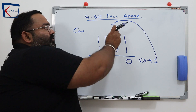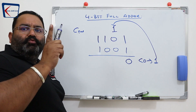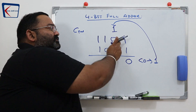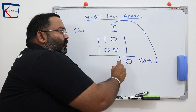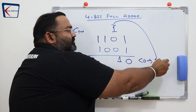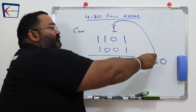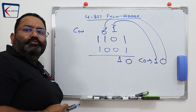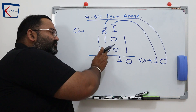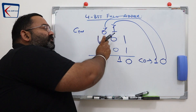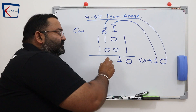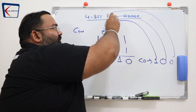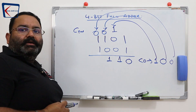Now again we add them. 1 plus 0 gives me 1; again 1 plus 0 again 1. So 1 plus 0 plus 0 gives me 1 — nothing to carry, so carry out is 0. Again the carry-in here is 0. 0 plus 1 is 1, so 0 plus 1 plus 1 plus 0 gives us 1, and carry out is 0. This carry out becomes carry-in to the next stage.